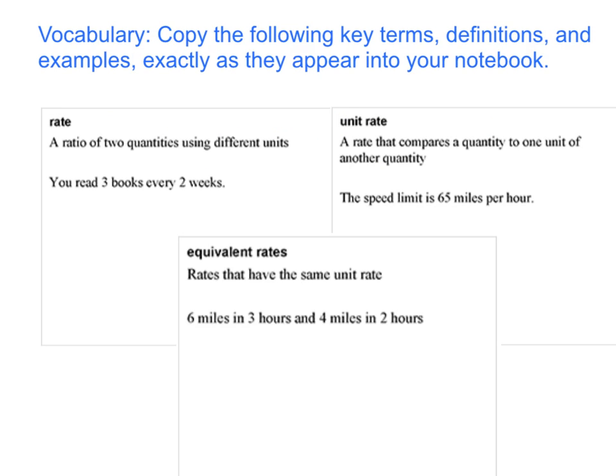Copy the following key terms, definitions, and examples exactly as they appear into your notebook. A rate is a ratio of two quantities using different units. The example is you read three books every two weeks. A unit rate is a rate that compares a quantity to one unit of another quantity. Your example is the speed limit is 65 miles per hour. So the one there is per one hour.